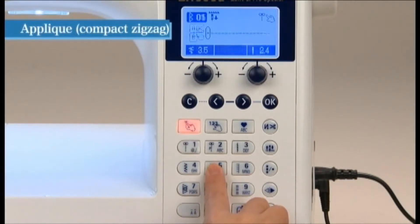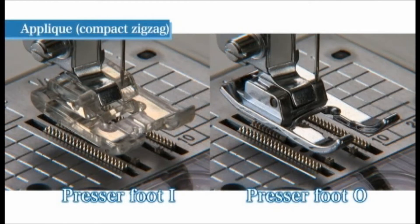A compact zigzag stitch is used to sew the edge of an applique of cut fabric. Select direct pattern number five. Use the presser foot I or O.